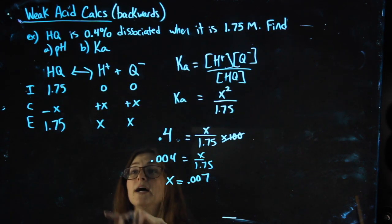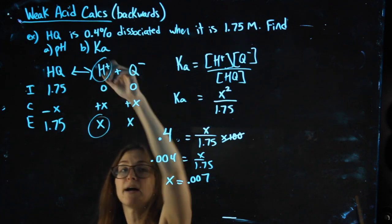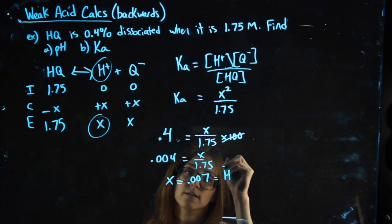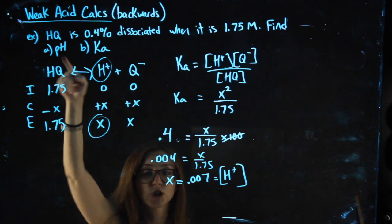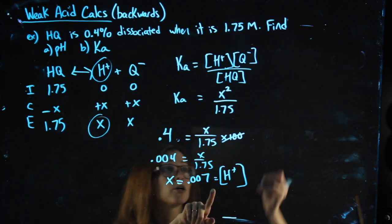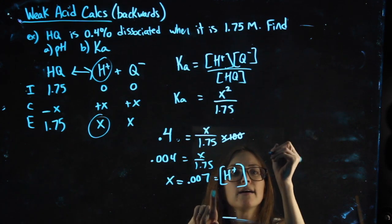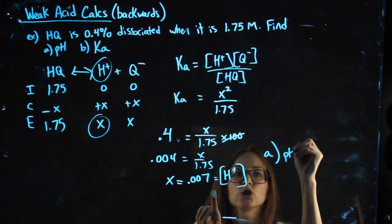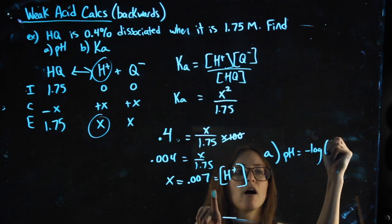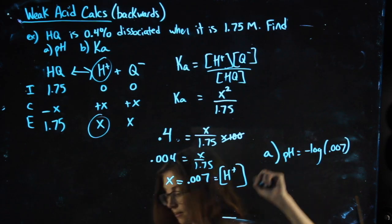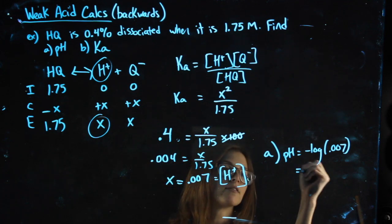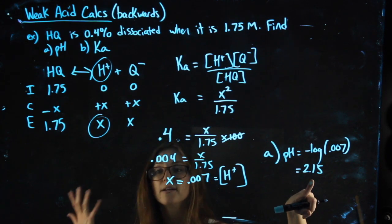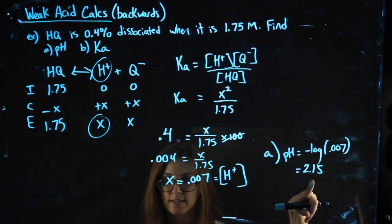The ICE chart is here to remind us that X is my H plus. So if I want the pH, as soon as I have my H plus, I'm good to go. For part A, pH is negative log of 0.007. Negative log 0.007, I get a pH of 2.15. pH being less than 7 makes sense since we're dealing with an acid.